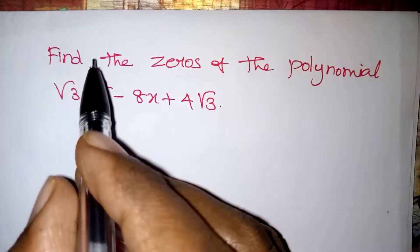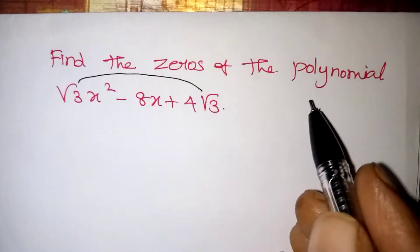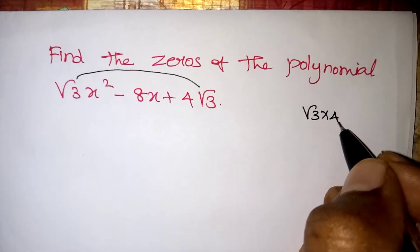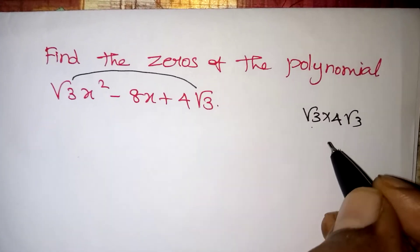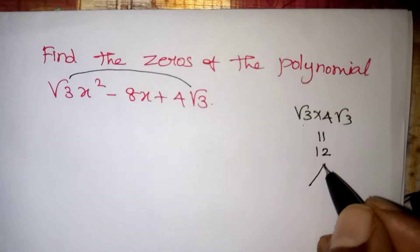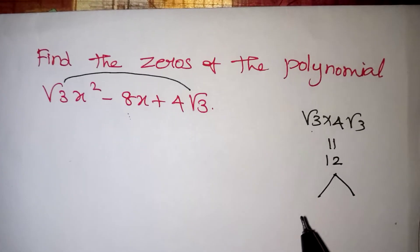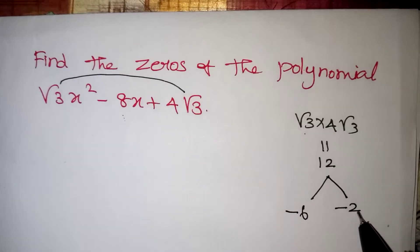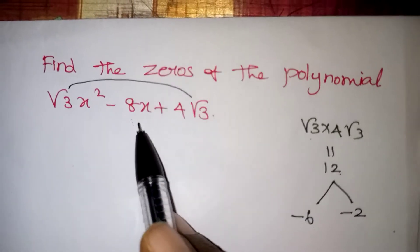For factorization, the first term and the last term coefficients should be multiplied. So: root 3 × 4·root 3 — root 3 × root 3 is 3, so 4 × 3 = 12. We need two numbers whose product is 12 and whose sum is minus 8. So we take minus 6 and minus 2: 6 × 2 = 12, and minus 6 + minus 2 = minus 8.